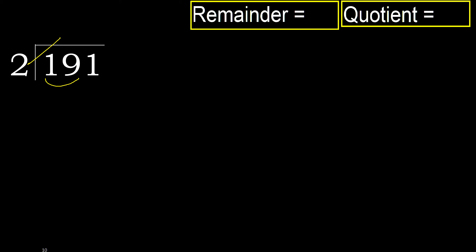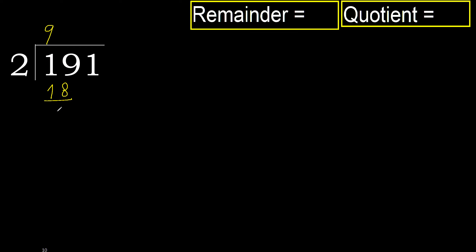2 multiplied by which number is nearest to 19 but not greater? 2 multiplied by 9 is 18. 18 is not greater. Subtract: 19 minus 18 is 1.